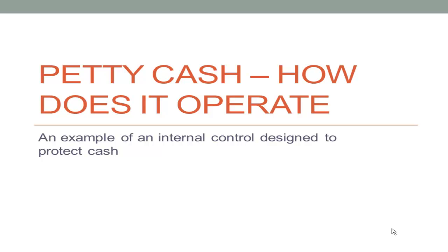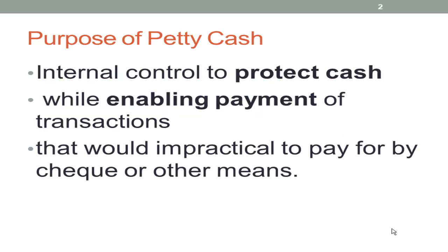Petty Cash is an example of an internal control designed to protect the assets of a business — in this case, the asset is cash. The purpose of Petty Cash is as an internal control to protect cash while enabling the payment of transactions that would be impractical to pay for by other means. Petty Cash is really about efficiency: you want to protect your cash, but not to such an extent that it becomes inefficient, so we put a mechanism in place that is efficient for small amounts of cash.